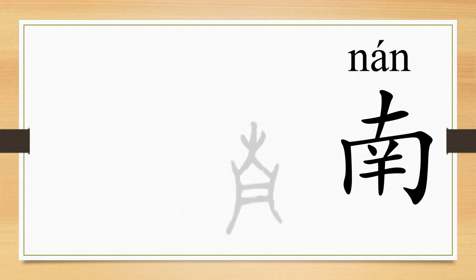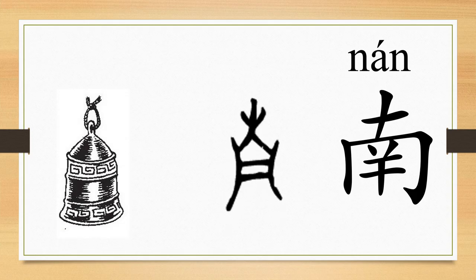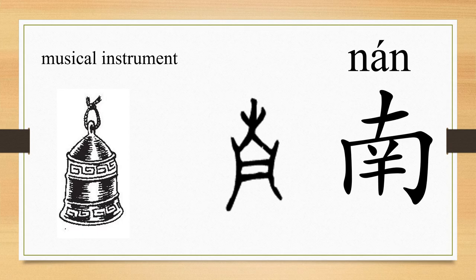The character nan comes from the image of a kind of musical instrument in south China in ancient times. So nan originally was the name for the musical instrument. And then it was borrowed to indicate the meaning of south. And nowadays it means south.